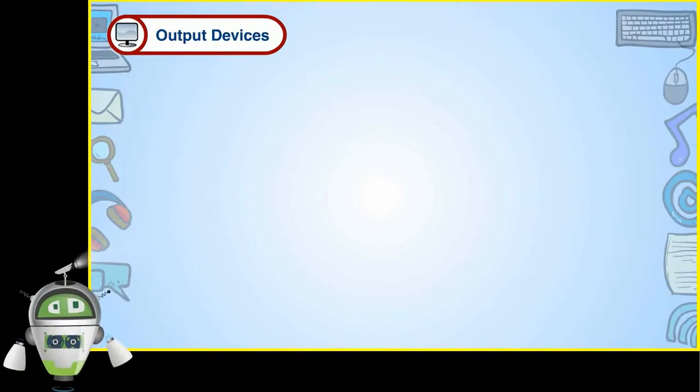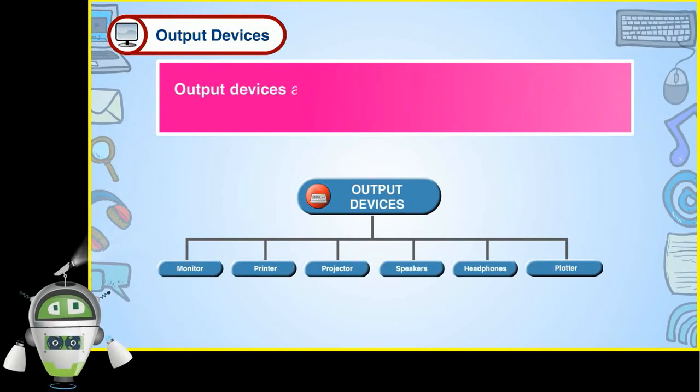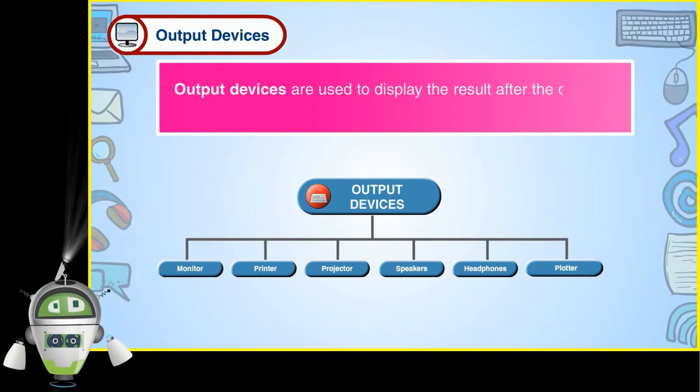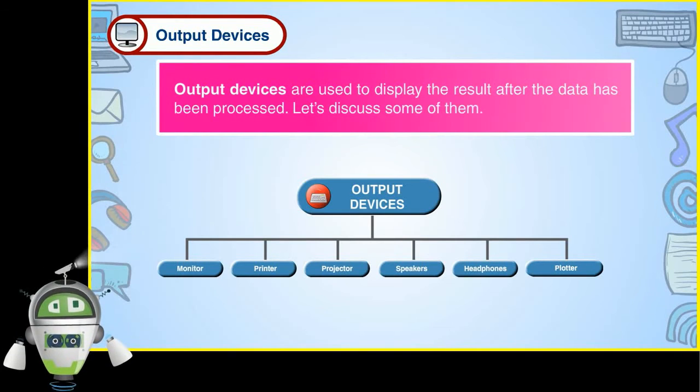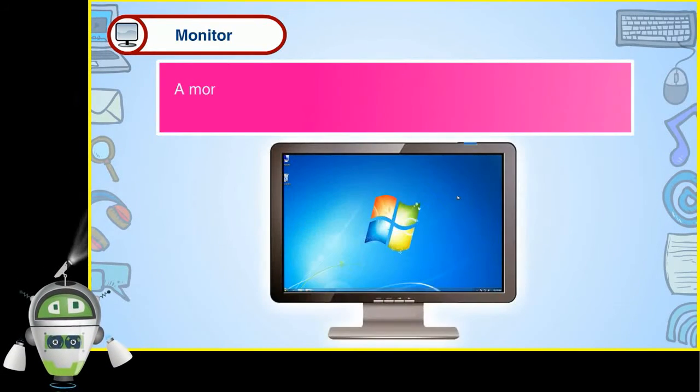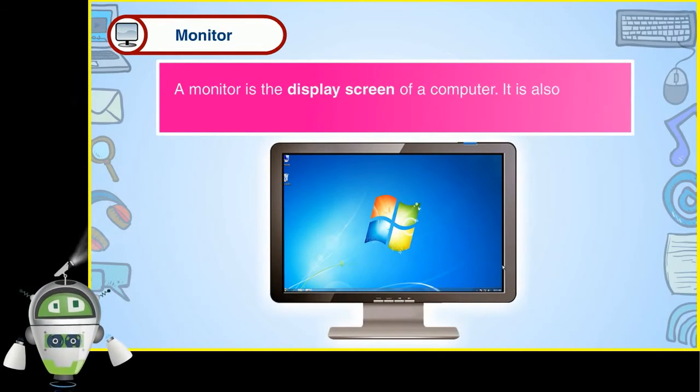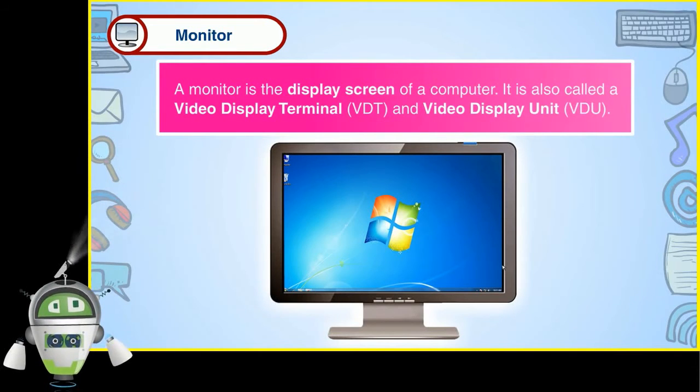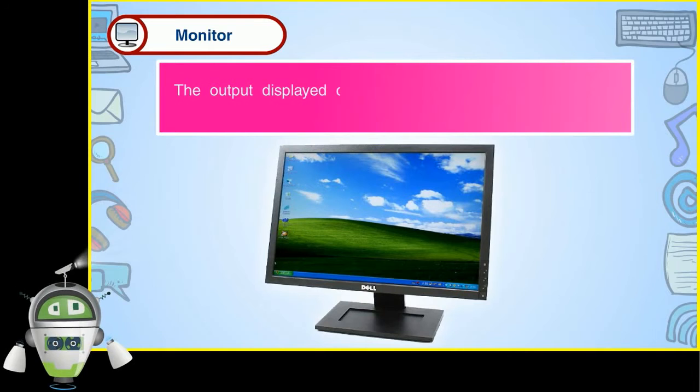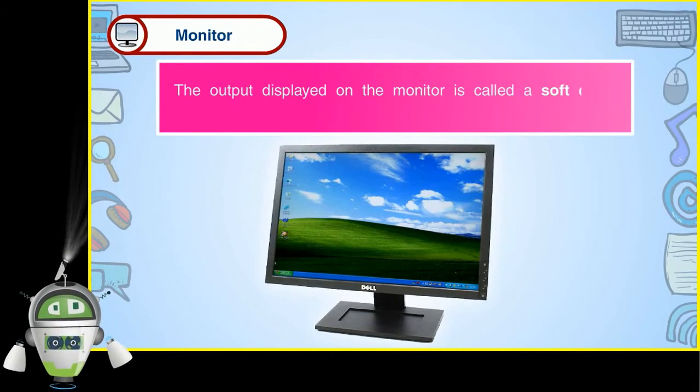Output devices: Output devices are used to display the result after the data has been processed. Let's discuss some of them. Monitor: A monitor is the display screen of a computer. It is also called a video display terminal (VDT) and video display unit (VDU). The output displayed on the monitor is called a soft copy. Nowadays, flat screen monitors are used.